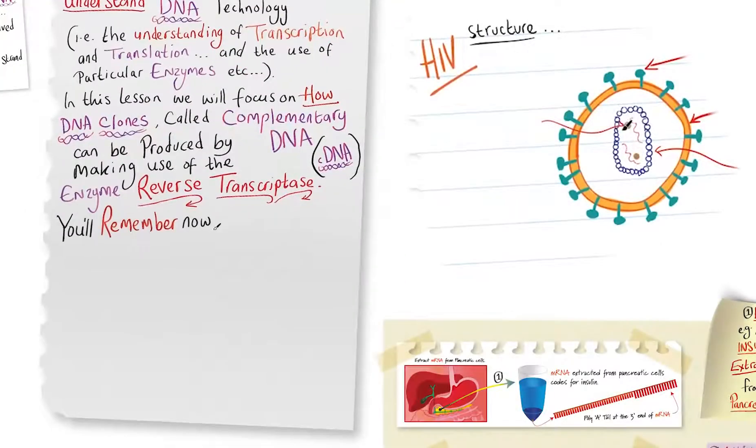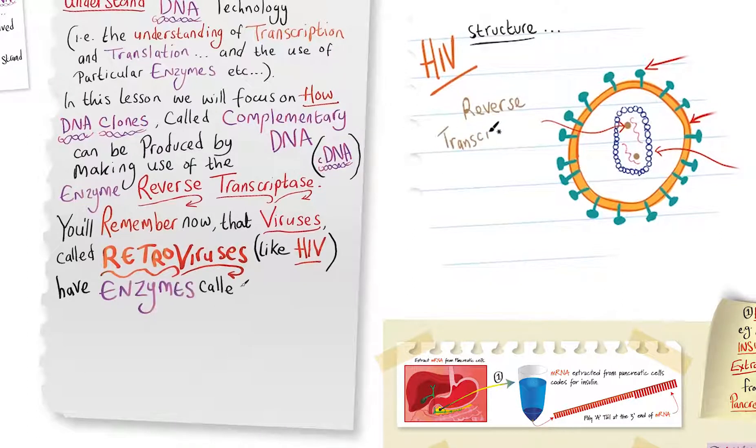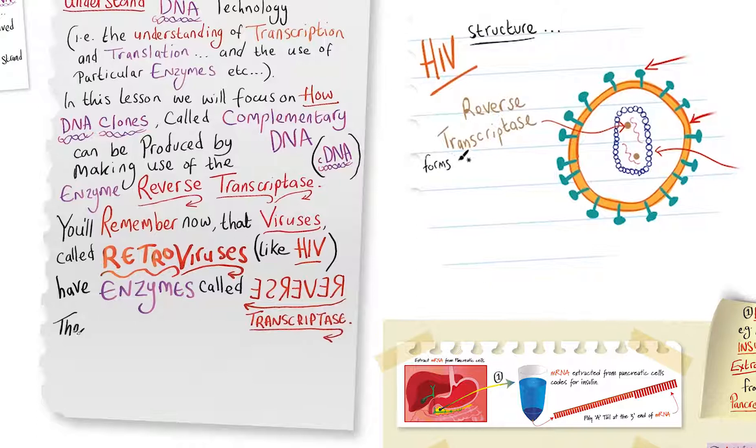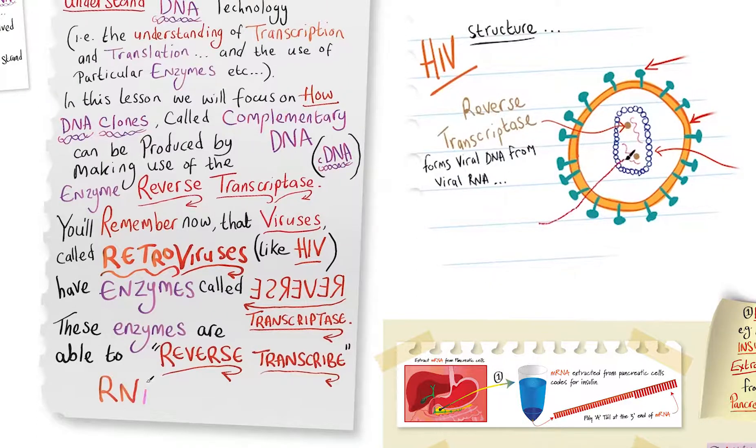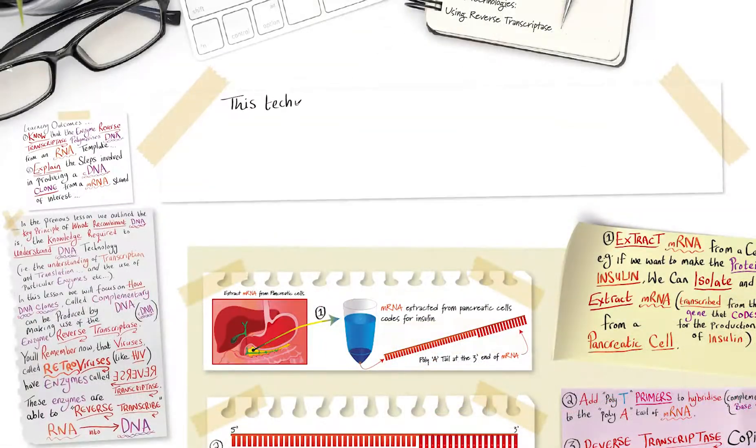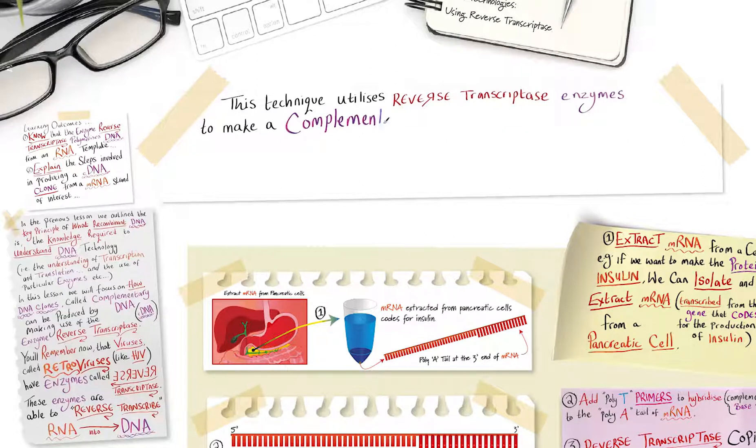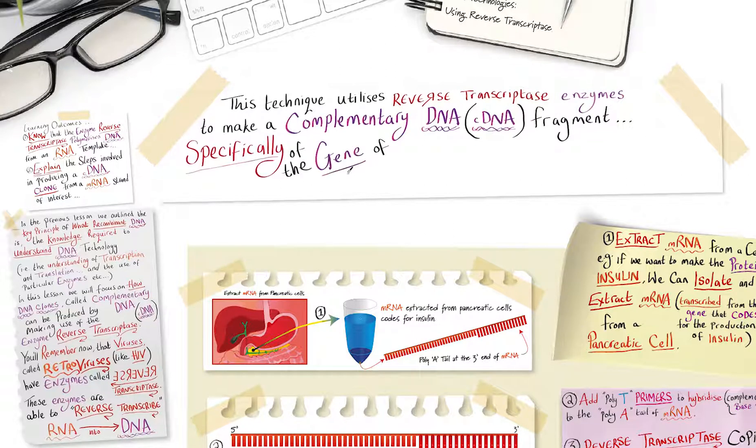You'll remember that viruses called retroviruses, like HIV, have enzymes called reverse transcriptase. These enzymes are able to reverse transcribe RNA into DNA. This technique utilizes reverse transcriptase enzymes to make a complementary DNA, cDNA fragment, specifically of the gene of interest from a messenger RNA molecule.